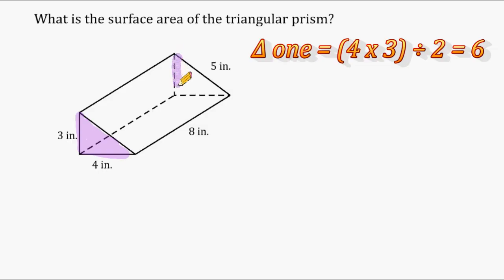And because the other triangular surface is congruent to the first one, they are going to be equal in area. So if this one has an area of 6, that one has an area of 6.